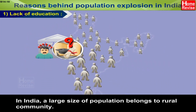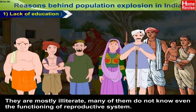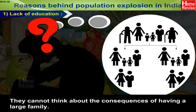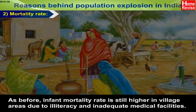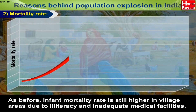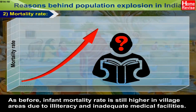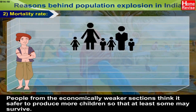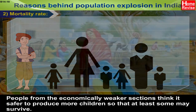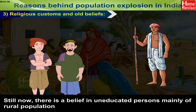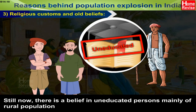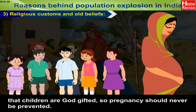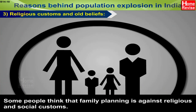India has some specific reasons behind its huge population explosion. In India, a large part of the population belongs to rural communities. They are mostly illiterate and many do not know even the functioning of the reproductive system. They cannot think about the consequences of having a large family. Infant mortality rate is still higher in village areas due to illiteracy and inadequate medical facilities. People from economically weaker sections think it's safer to produce more children so that at least some may survive. Some people think that family planning is against religious and social customs.